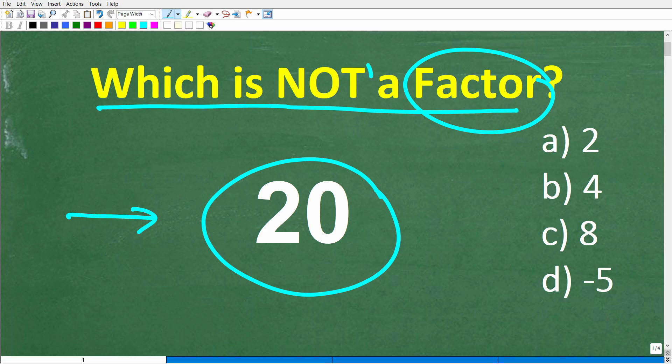Now we have to be careful here because the question is which is not, not which numbers are factors. Which is not a factor of 20? Let's take a look at our choices. This is a multiple choice question. So A is 2, B is 4, C is 8, and D is negative 5. Again, which of these numbers here is not a factor of 20?